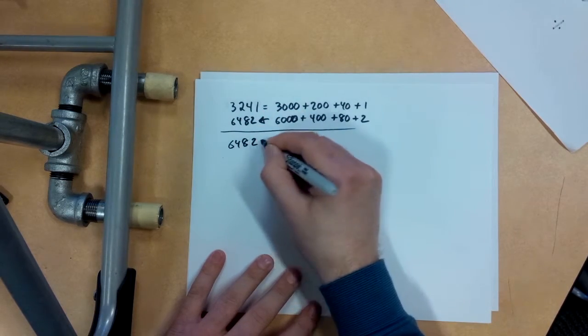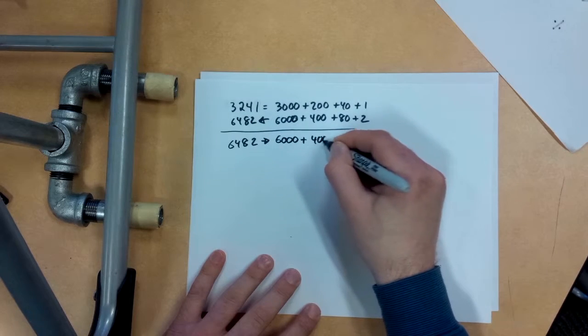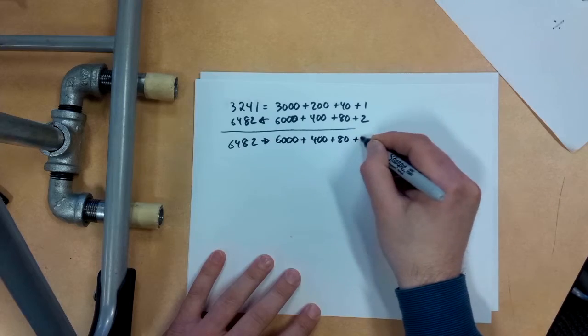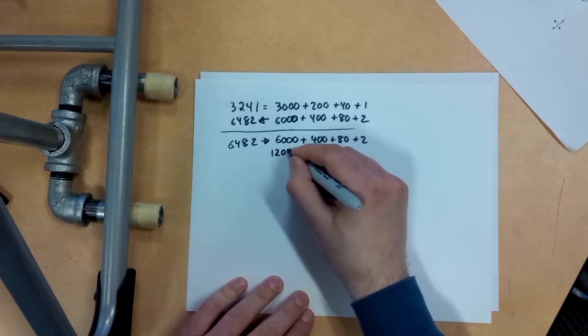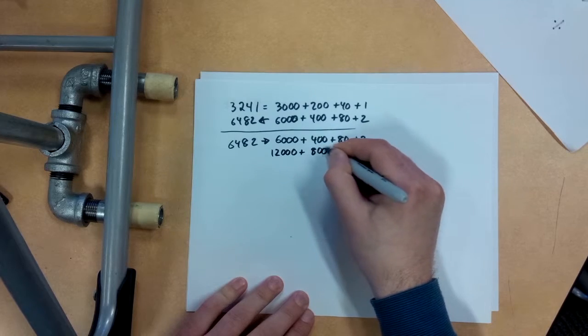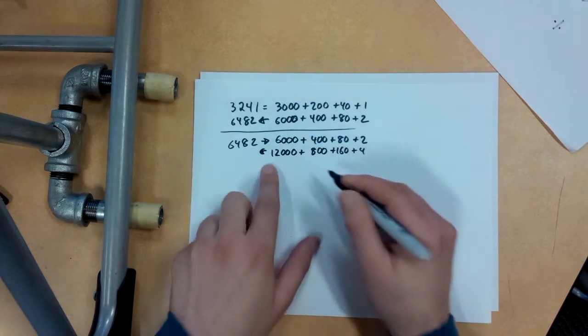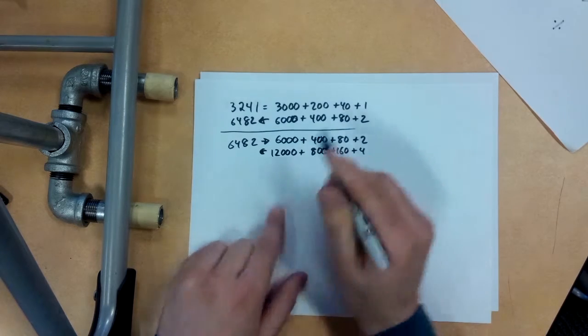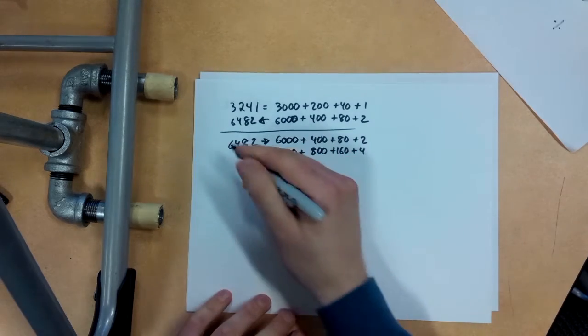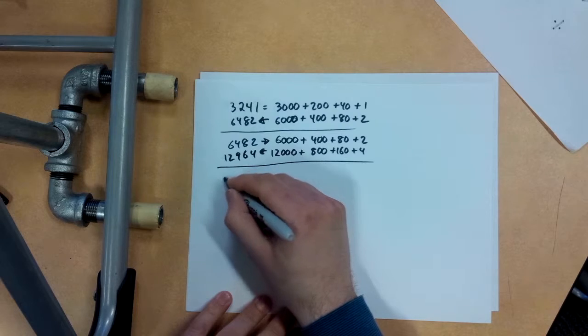I'm going to double that up. 6,482, that's 6,000. I know it's repetitive, but right now we're just building the foundations. 6,000 plus 400 plus 82 plus 2, that's going to be 12,000 plus 800 plus 160 plus 4. So bring that back, 12,964. So that's the second one.